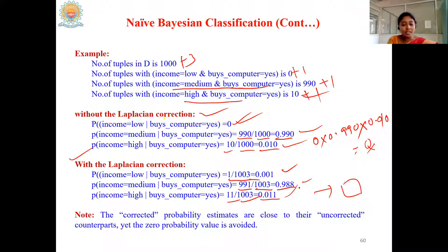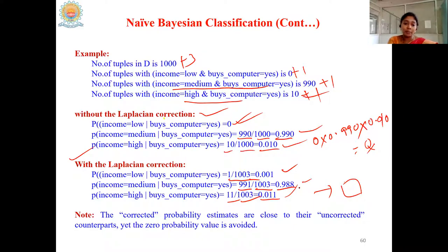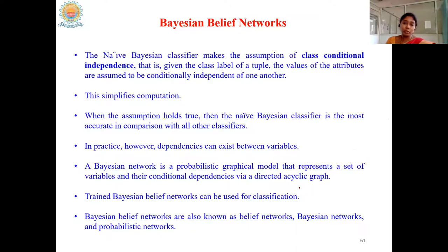Since there exists only a little difference, we can easily add count 1 to the numerator and add the total counts to the denominator whenever the calculation results in a zero probability value. This is the small leftover topic in Naïve Bayes. We are now moving to Bayesian belief networks.